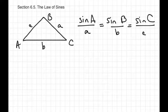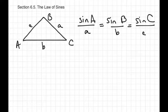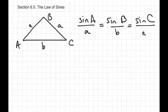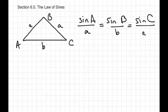What we would need to know is one angle and its opposite side. So you either need to know angle A and side a, or angle B and side b, or angle C and side c. Otherwise, you can't use the Law of Sines to find a missing side or a missing angle.